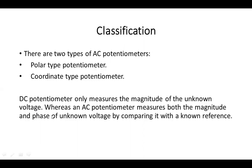DC potentiometer only measures the magnitude of unknown voltage, whereas an AC potentiometer measures both the magnitude and phase of unknown voltage by comparing it with known reference. Clear to you about the DC and AC.